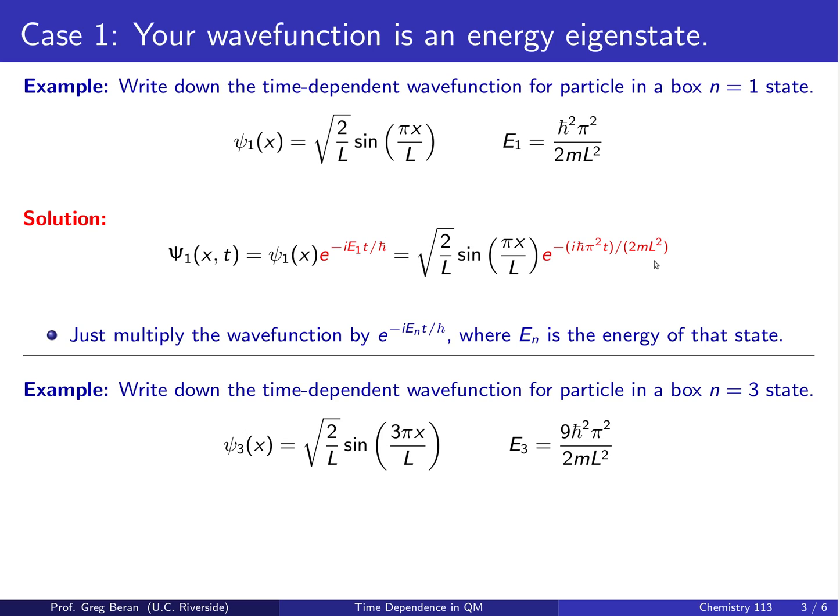Alright, so again, the basic idea is we're just going to take ψ₃ and multiply it by this exponential time-dependent factor e to the minus i E₃t over h-bar. The only difference from our last example is the energy that appears in the exponent. In this case, it's the energy of the ψ₃ state.